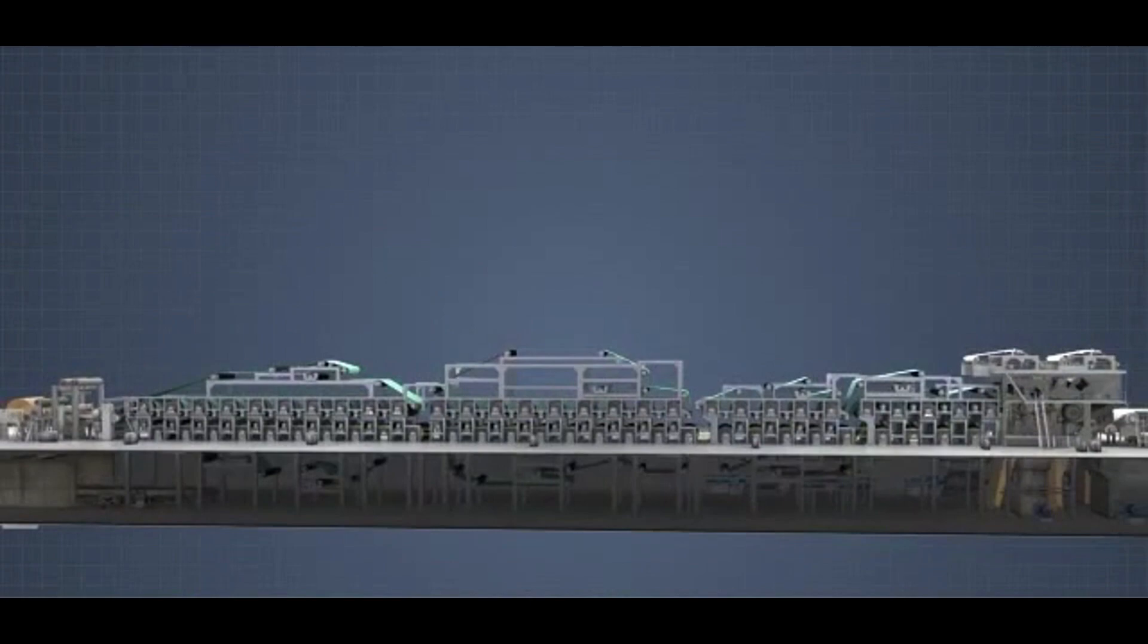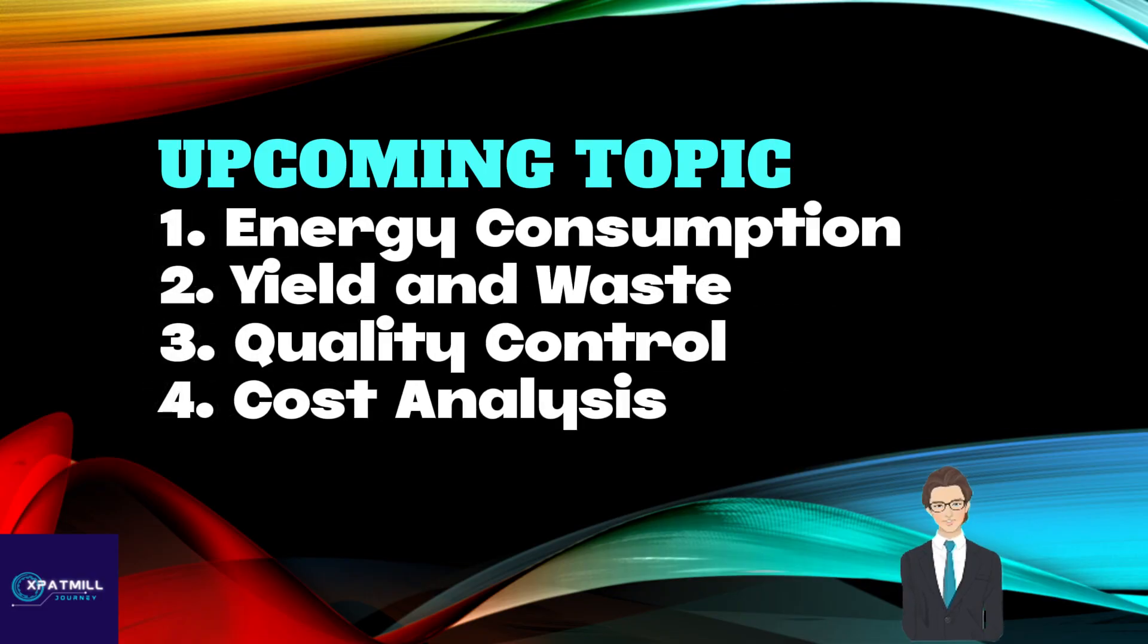Thank you for joining this tutorial. Upcoming topics, here's a sneak peek at what we'll cover today. Energy consumption: How to calculate and reduce energy consumption in your paper machine operations. Yield and waste: Measuring paper yield and minimizing waste during production.